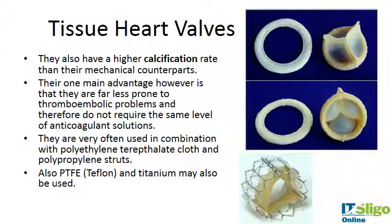Tissue valves also have higher calcification rates, where calcium deposits build on the valve, causing stenosis — blocking the valve from opening — and may cause blood regurgitation, clotting, and failure. The main advantage is they are far less prone to thromboembolic problems and don't require the same level of anticoagulant medication, making them more favorable for some patients. They are used in combination with polyethylene terephthalate cloth or polypropylene struts.